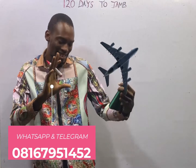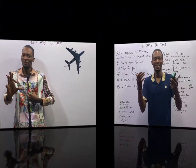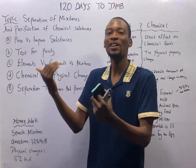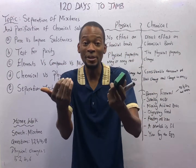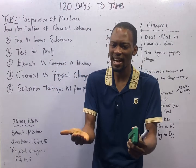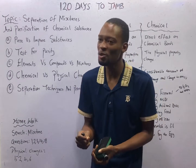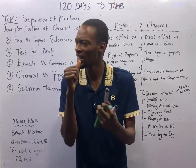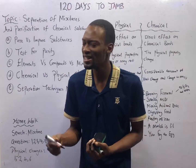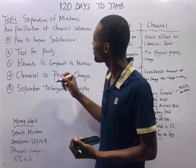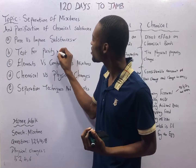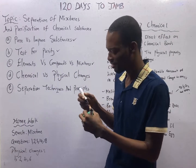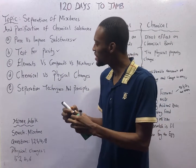Ladies and gentlemen, it is time to take off. This is episode 3 of the 120 Days to Jump Chemistry with Flash Isaac. In episode 2, we were able to discuss matter, pure substances and impure substances, tests for purity, elements, compounds, and mixtures.